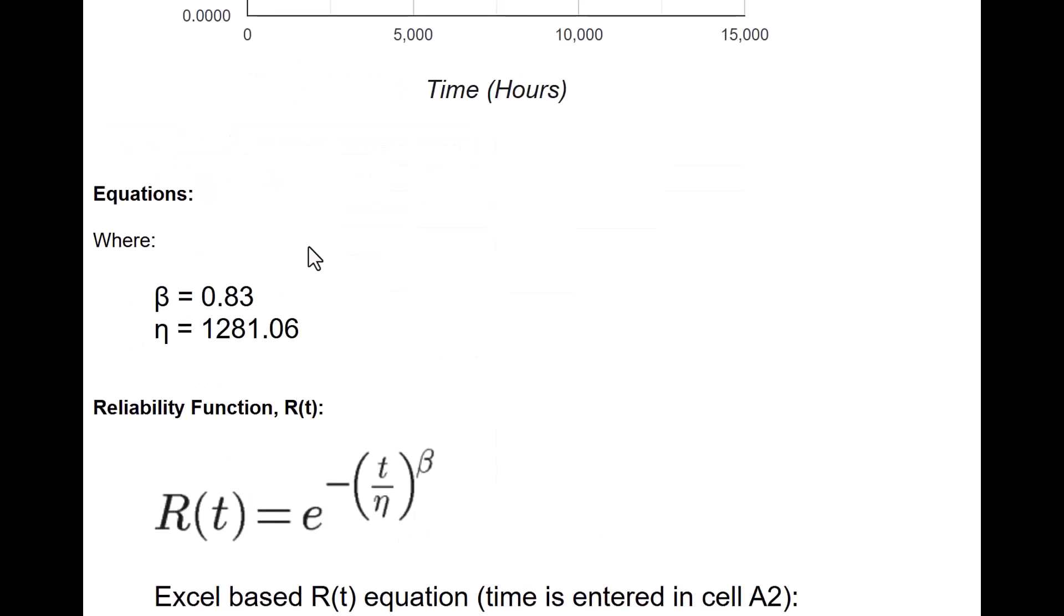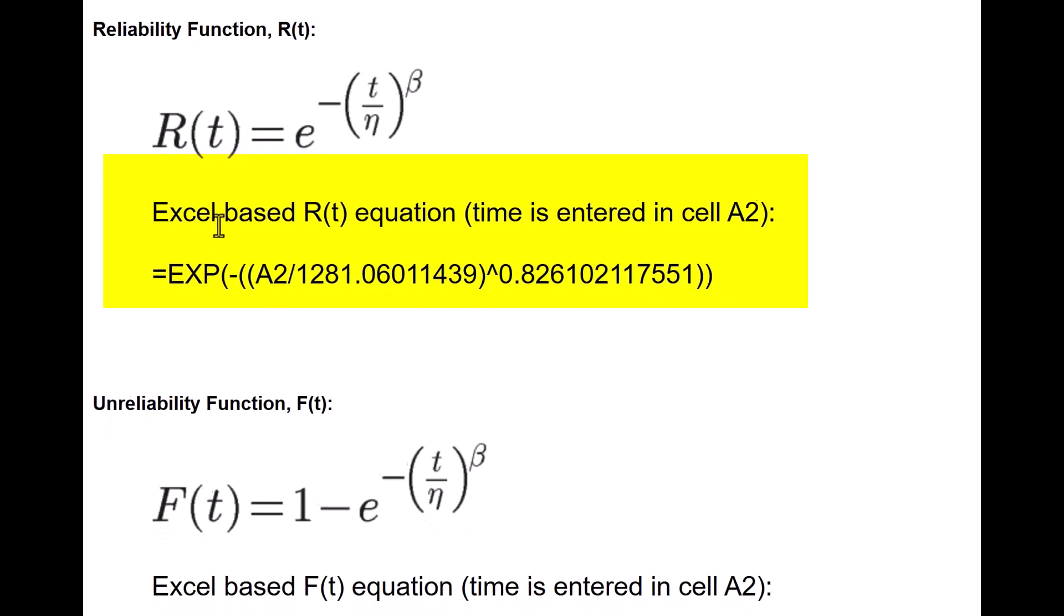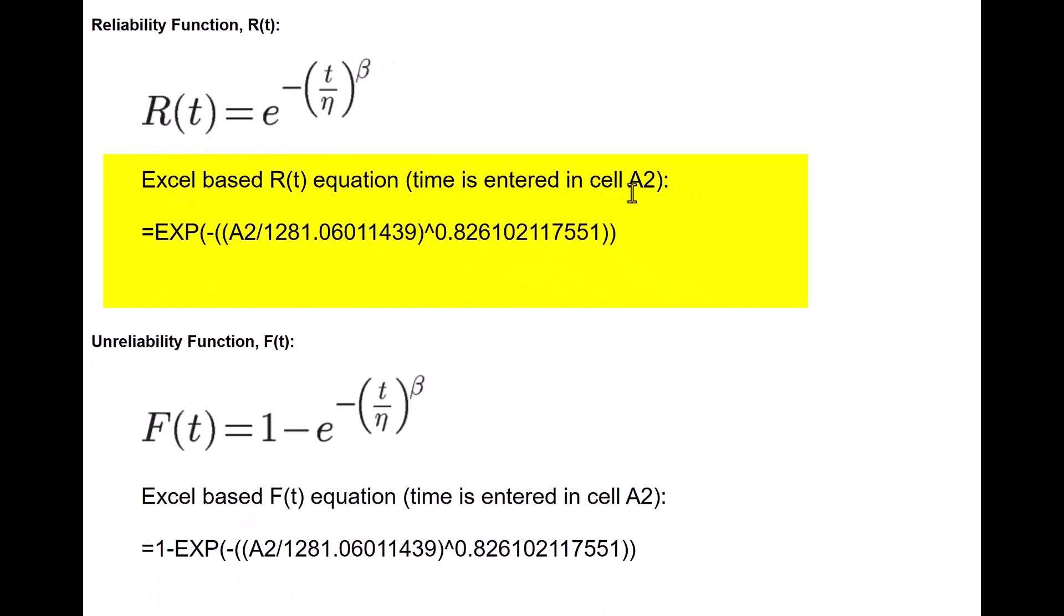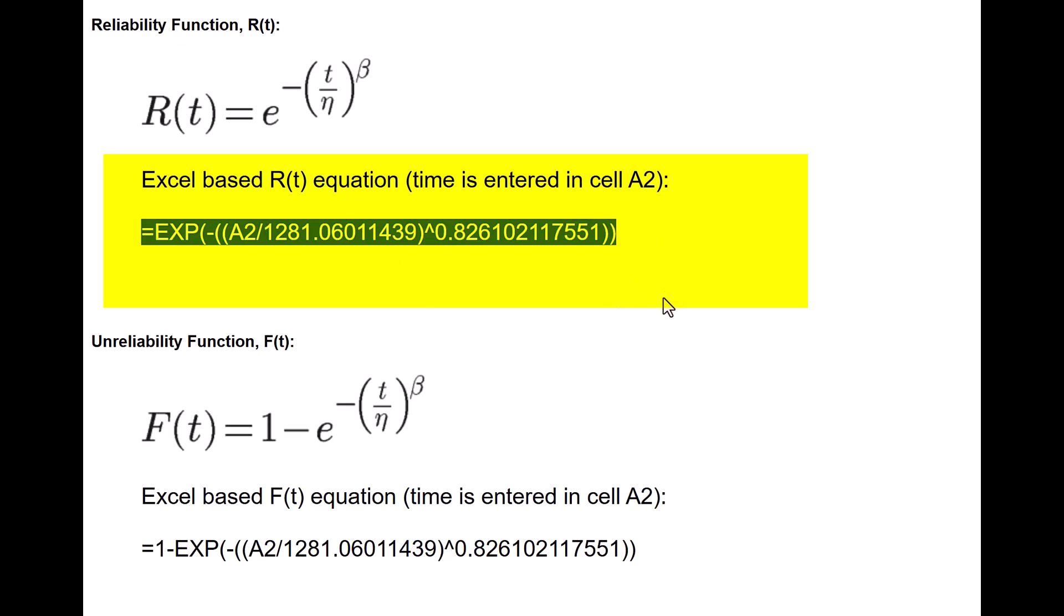So the equations also it has given, the beta value is 0.83, eta value is 1281, reliability at time t equals e to the power minus t upon eta raised to beta. It has also given interestingly the Excel based equation and time is entered in cell A2. So if we entered this in time in A2 we will get the value of reliability.